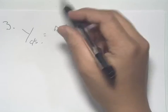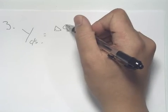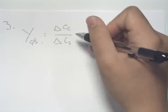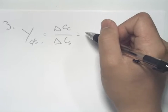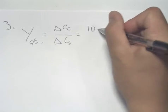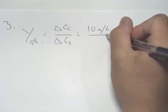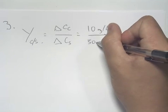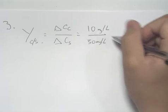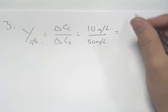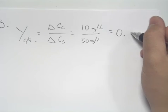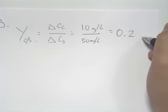Our yield of cell over substrate is our change in cell concentration delta C over our change in substrate concentration delta Cs. We're given the values of 10 milligrams per liter for cell concentration change and 50 milligrams per liter for substrate concentration change, which gives us a yield coefficient of 0.2 or 20 percent.